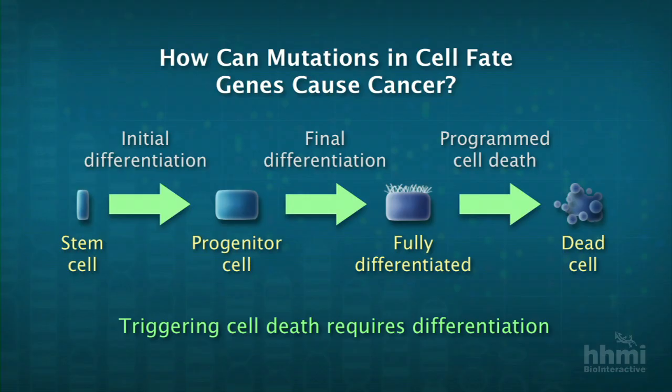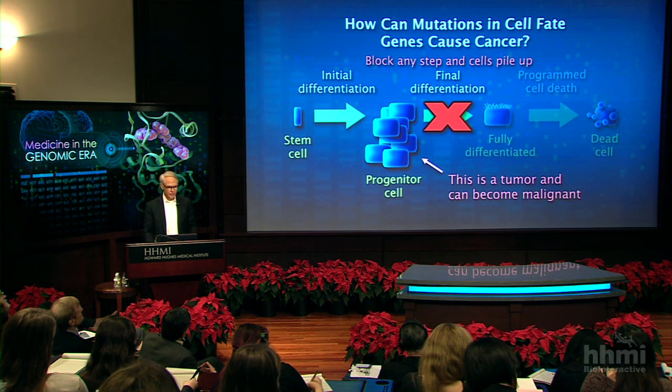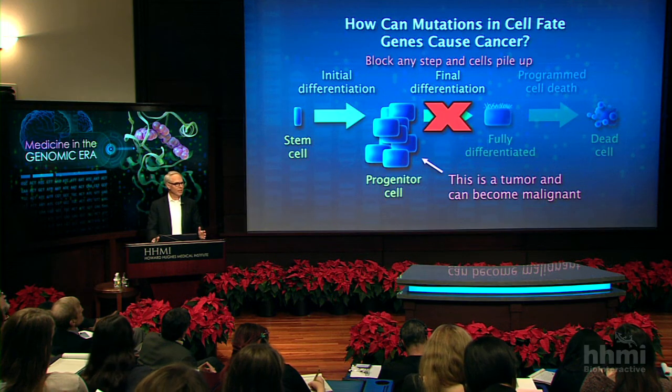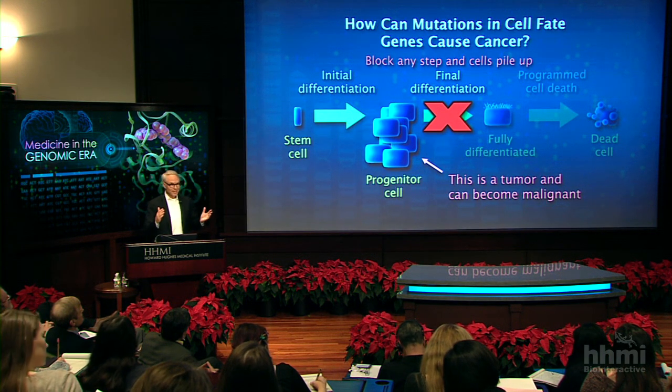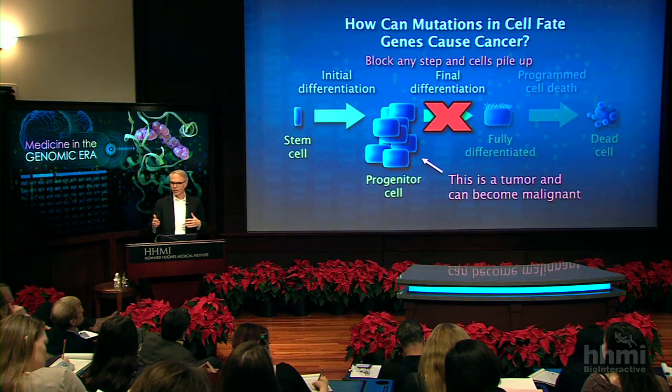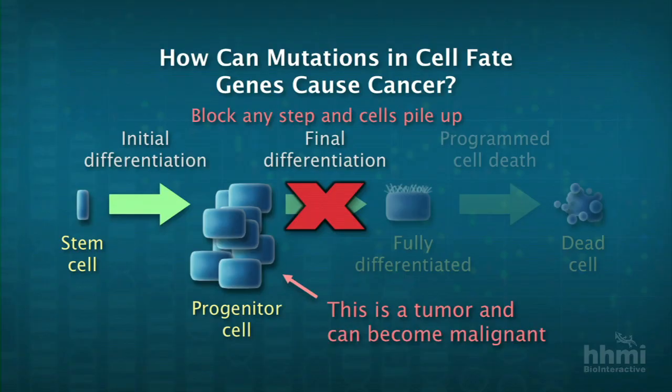Eventually those mature, fully differentiated cells tend to die. But how does a mutation in a gene that regulates that process cause cancer? It doesn't change the proliferation rate of the cell — it just blocks the ability of the cell to undergo one of those steps in differentiation. So if there's a block, there's a pileup of cells trying to get through that block, and that pileup of cells can form a tumor.